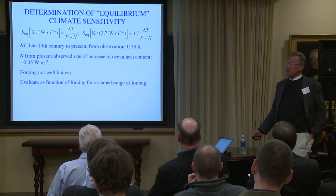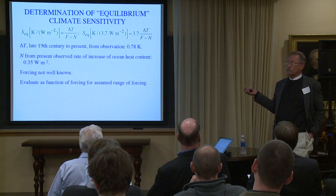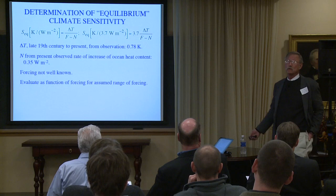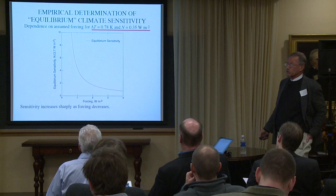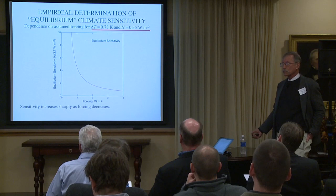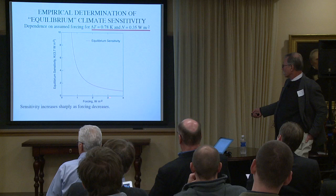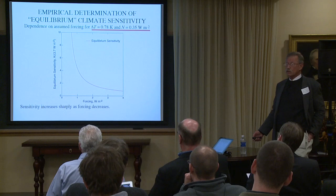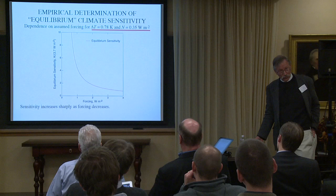Forcing — this change in the radiation balance that we've imposed on the climate system — is not well-known. So throughout this talk I'll consider forcing as an unknown or variable quantity, and look at things as a function of an assumed range of forcing. Taking into account the 0.78 K temperature change and the 0.35 W/m² by which the planet is heating — inferred from ocean calorimetry — as a function of the forcing, if the forcing is 3 W/m², I get something like an equilibrium sensitivity of 1 K per 3.7 W/m². On the other hand, if the forcing is down at 1 W/m², I'm up at 6, 8, or 10. So the result is very sensitive to the forcing we impose on it.